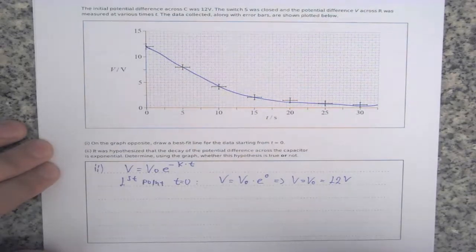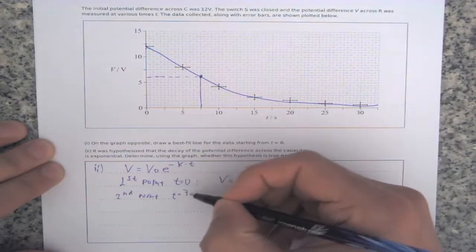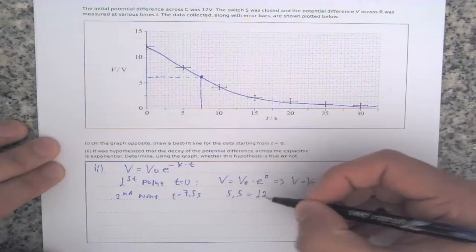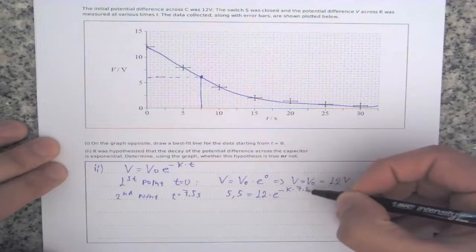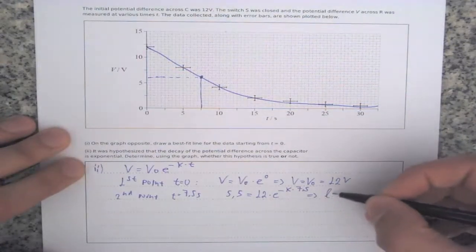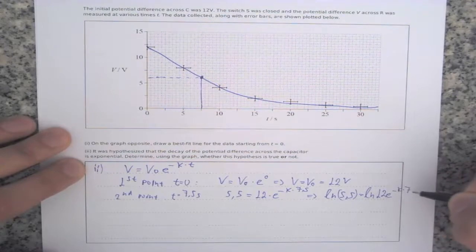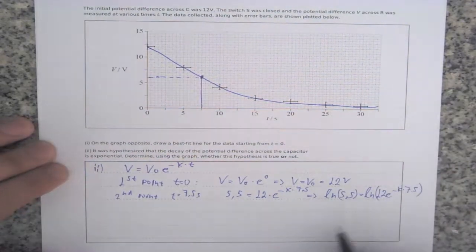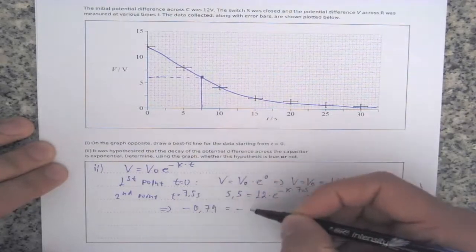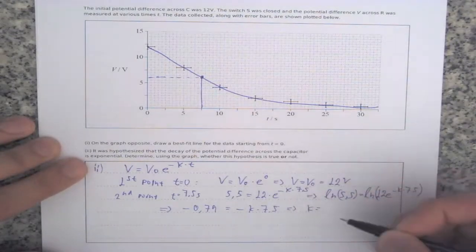Taking a second point at T equals 7.5 seconds, the voltage is approximately 5.5 volts. So 5.5 equals 12 times e to the power of negative K times 7.5. Taking the natural logarithm of both sides: ln(5.5/12) equals negative K times 7.5, giving minus 0.79 equals negative K times 7.5. Solving for K gives a value of 0.1.